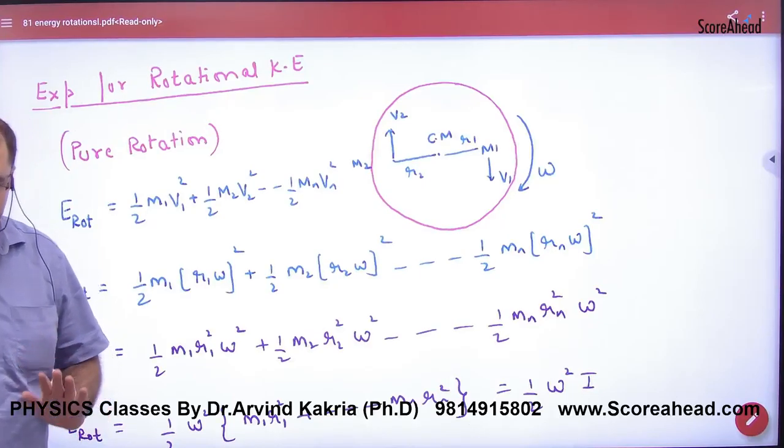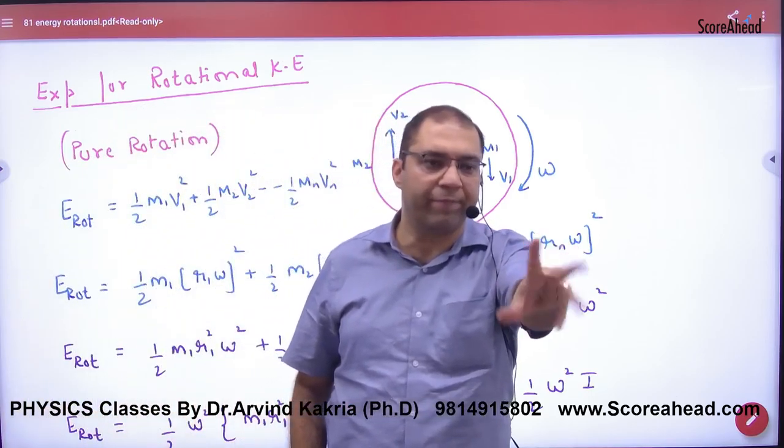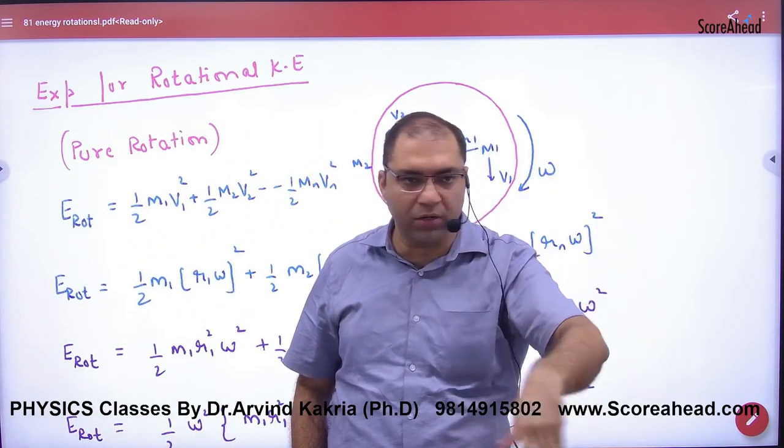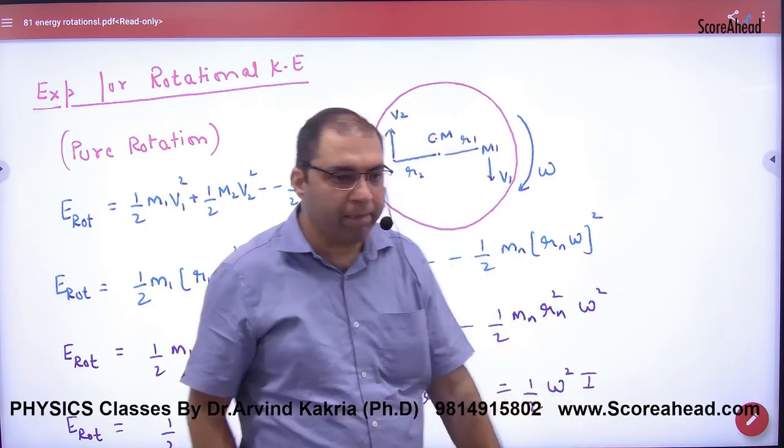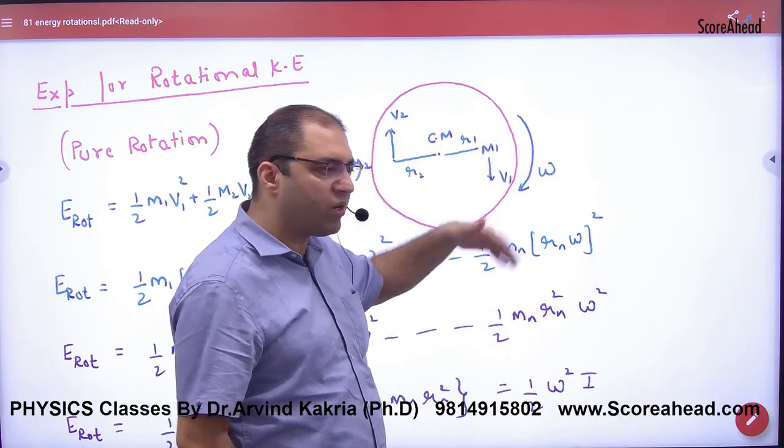Expression for Rotational Kinetic Energy. Let's say that one body is floating. Particles are floating in a circle. This particle is floating in a circle, and the whole body is rotating with omega.